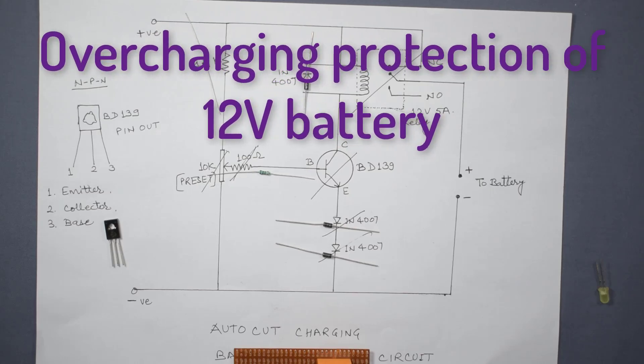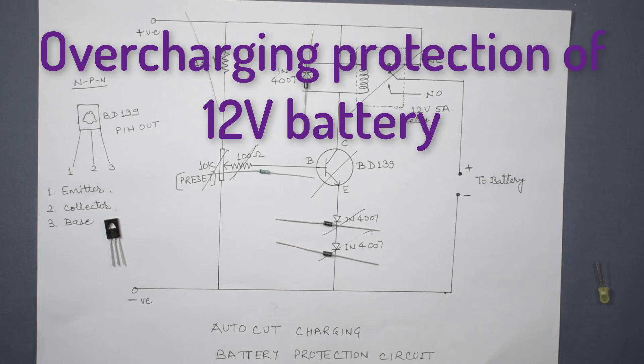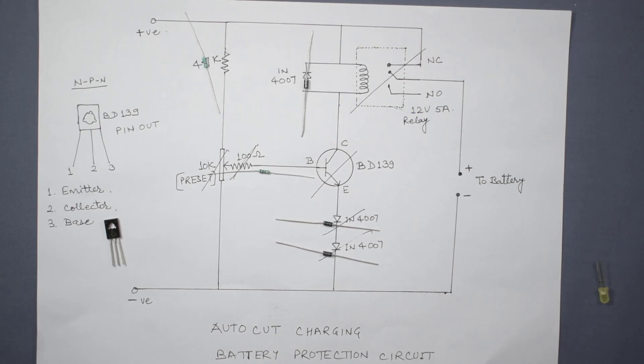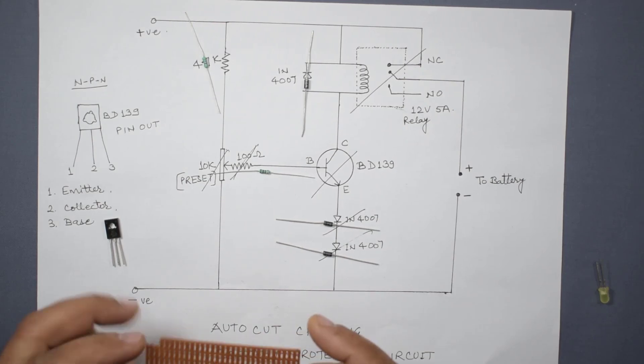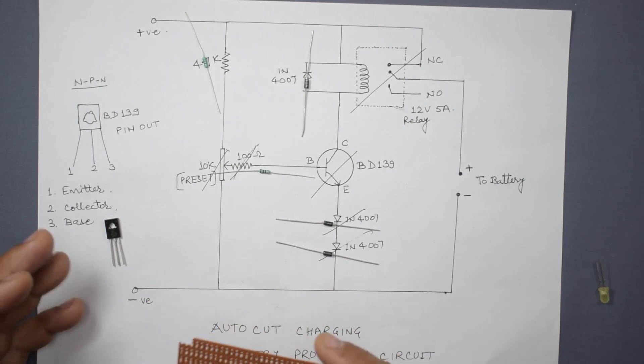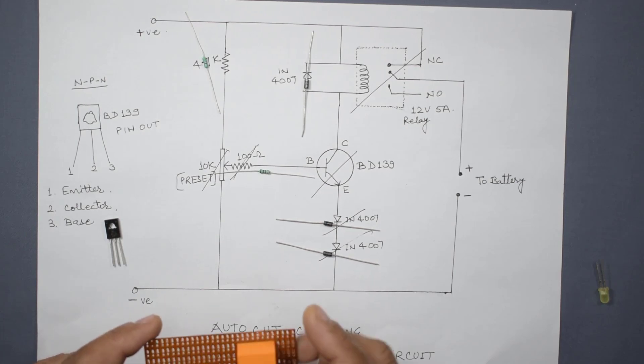Hello friends, welcome once again to my channel Innovative Ideas. Today I want to show you how to make an auto-cut battery charger, that is a battery protection circuit. As you achieve the threshold value for battery charging, it will auto-cut the charging circuit. I will show you how to make this; it's very simple and this is the best circuit I could get.